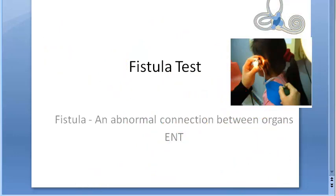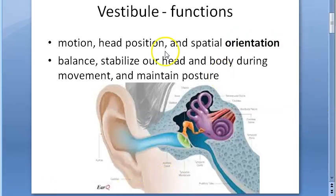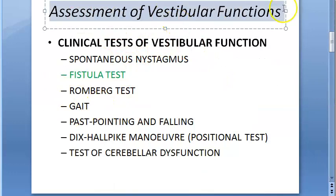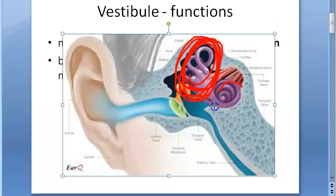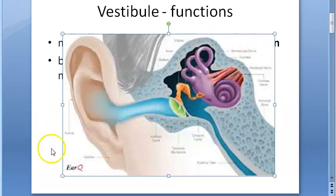Today we are looking at the fistula test. Basically, this is a test for assessing vestibular functions. In the ear, there are two main functions: vestibular functions and cochlear functions. In the fistula test, we are checking the vestibular functions.